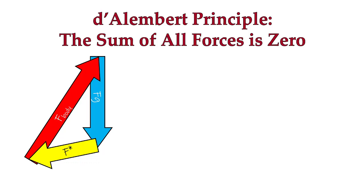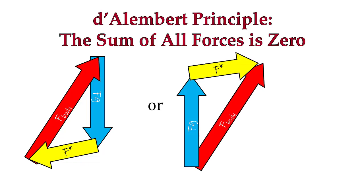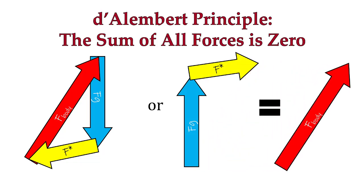D'Alembert's principle says that the sum of all of these forces is going to be equal to zero. On the left here, you can see that if we put all the vectors together tip to tail — the force that the body is exerting on a barbell, the force due to gravity, and the inertial force — they create a closed vector, and therefore the sum of all those vectors is going to be zero. So now if we move the force of the body to the other side of the equation, we reverse the signs of the force due to gravity and the inertial force, and we see that the force the body has to produce on that barbell or dumbbell is equal in magnitude and opposite in direction to the force due to gravity and the inertial force.